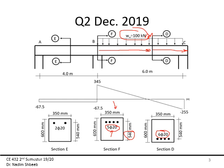For section E, there is only top steel: two φ20 bars. Section E starts from that point onward to the next support. Looking at the shear diagram — drawn at the centerlines of the columns — we have 345 kN on one side, 255 kN on the other, and constant shear of 67.5 kN for segment AB.